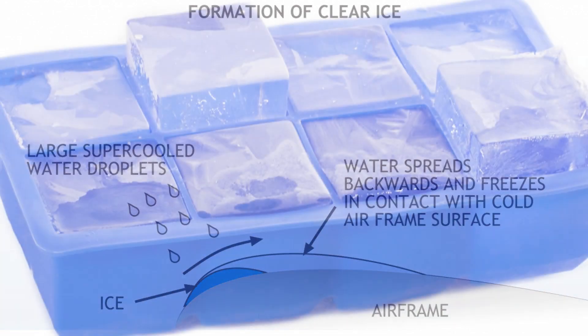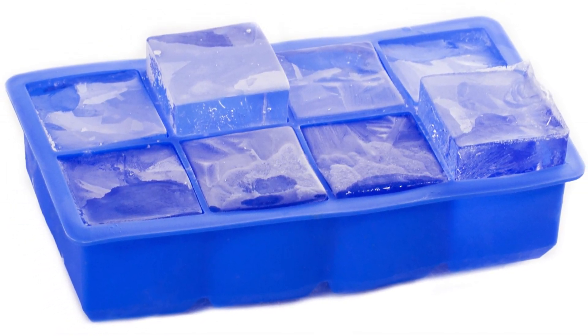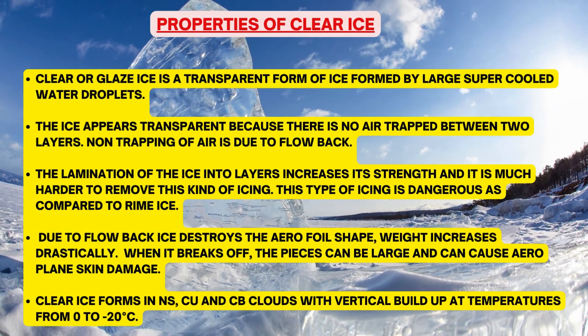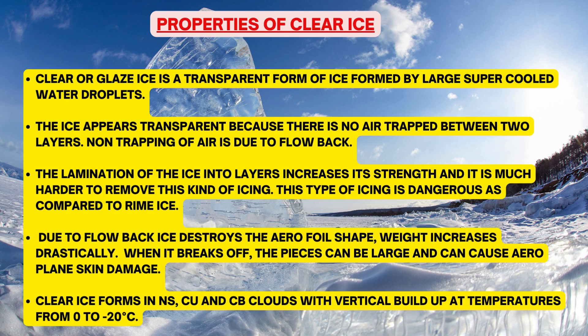If you want to visualize how it looks, it is similar to ice made in your freezer in an ice tray, which is semi-transparent. Clear or glazed ice is a transparent form of ice formed by large supercooled water droplets. The ice appears transparent because there is no air trapped between two layers, and the non-trapping of air is due to the flow back of water over the top and bottom surfaces of the wing. The lamination of ice in two layers increases its strength, making it much harder to remove.